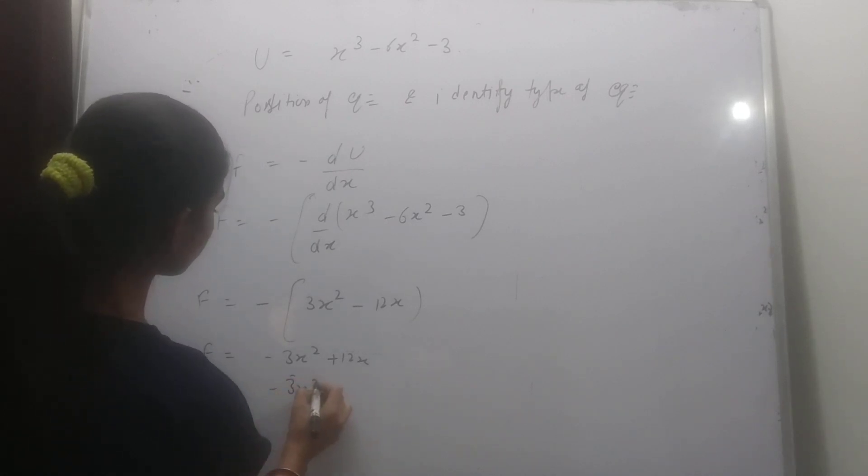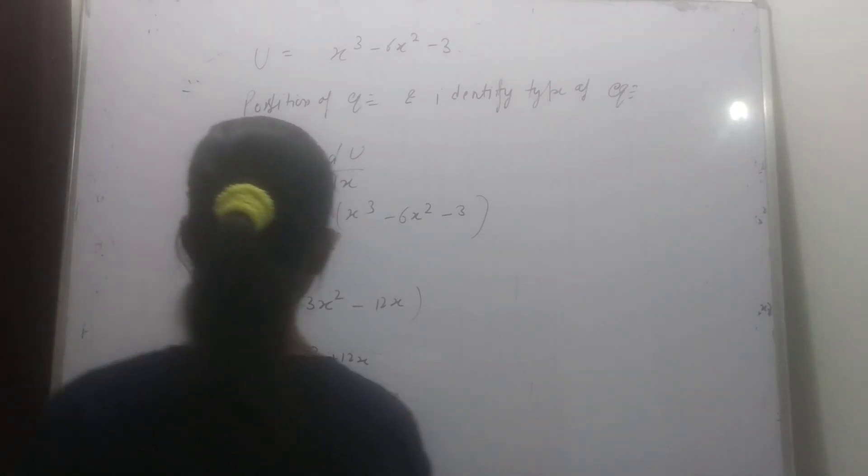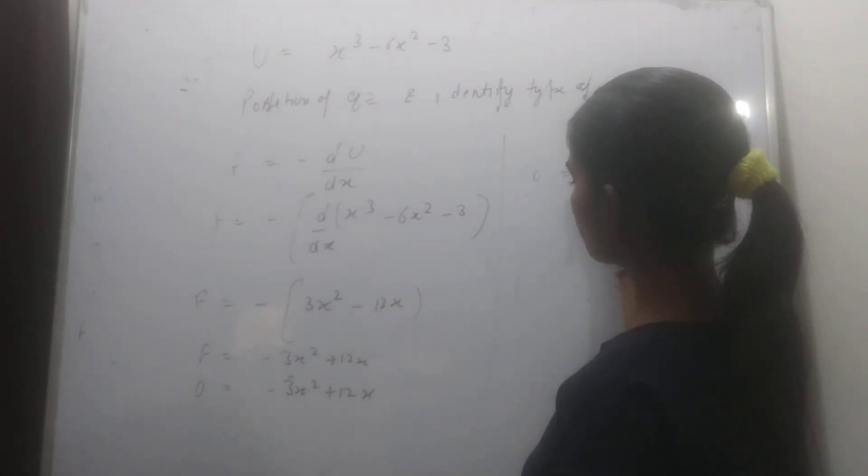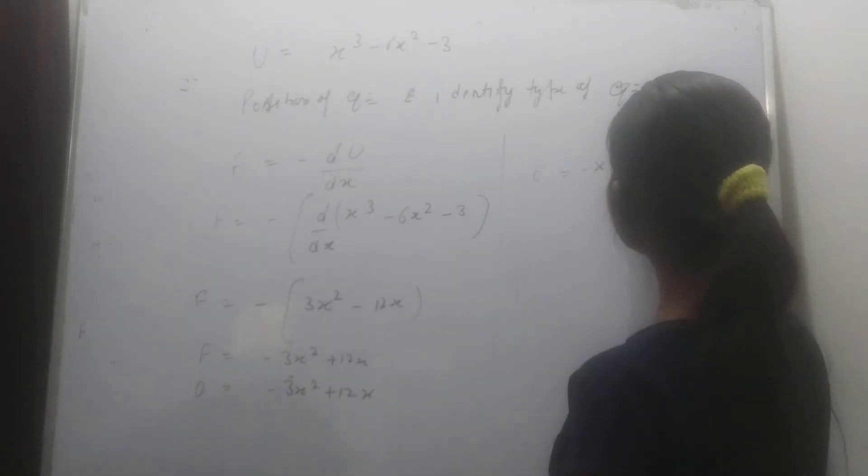We will divide by 3 first. 0 equal to x square minus 4x, or x square plus 4x.